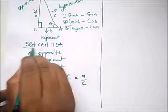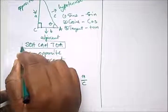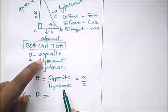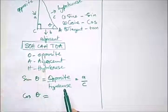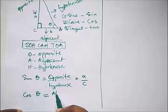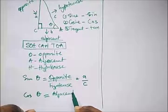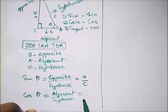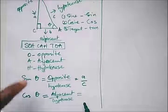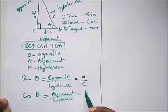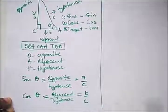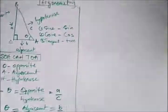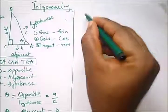To get cosine theta, we use CAH: cosine is adjacent over hypotenuse. Our adjacent side is B and our hypotenuse is C, so cos theta equals B over C.